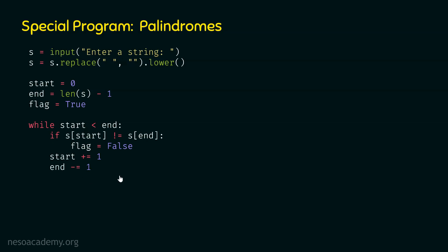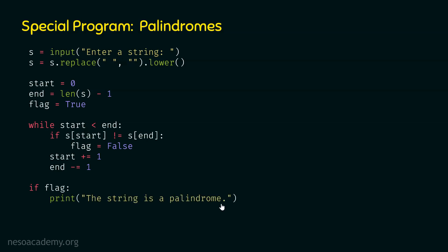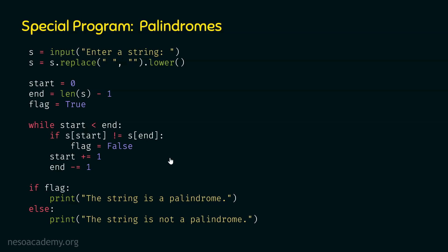After execution of this while loop, we need to check if flag is true or not. If flag is true, then the message 'the string is a palindrome' will be displayed on the screen. Otherwise, the message 'the string is not a palindrome' will be displayed. So this is the entire program which allows us to check whether the string is a palindrome or not.